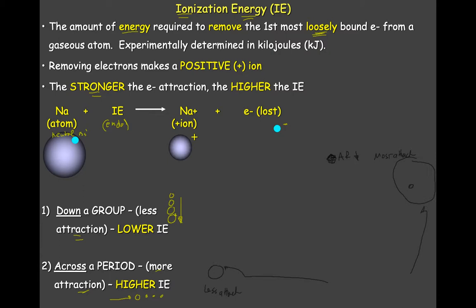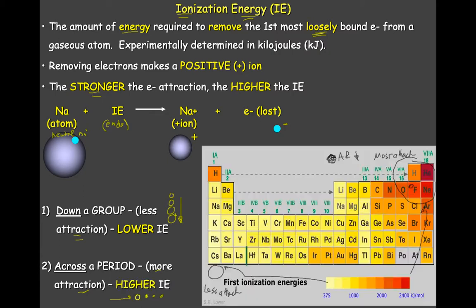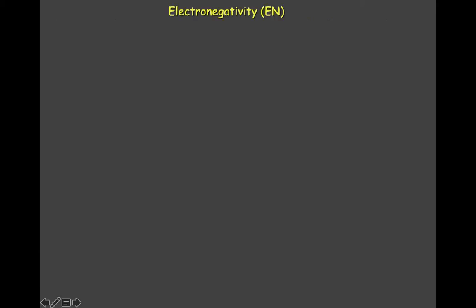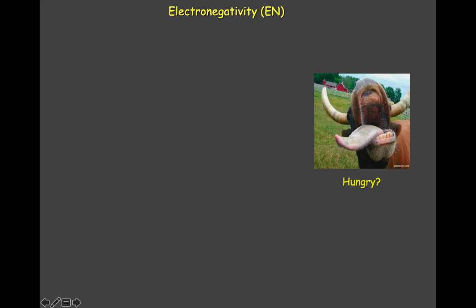That's the ionization energy. If you want to go to the second ionization energy, third — we'll do a little more with that later. The next data point you probably heard before is something called electronegativity, and we're going to do a lot with electronegativity in the next unit, so this is something you need to make sure you understand.